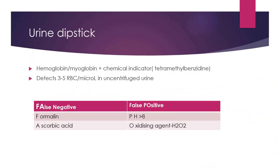The urine dipstick tries to measure RBCs or hemoglobin/myoglobin by means of a chemical indicator which changes color. Usually the chemical indicator is tetramethylbenzidine. It detects 3 to 5 RBCs per microliter in uncentrifuged urine, which roughly corresponds to 2 to 5 RBCs per high power field. Remember, there can always be false negatives and false positives. False negatives occur when urine was stored in a formalin-based bottle or the patient is taking excess ascorbic acid — remember: FA (formalin, ascorbic acid).